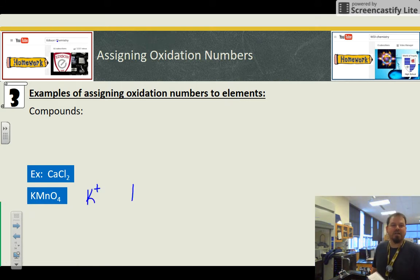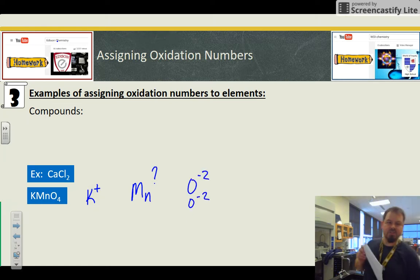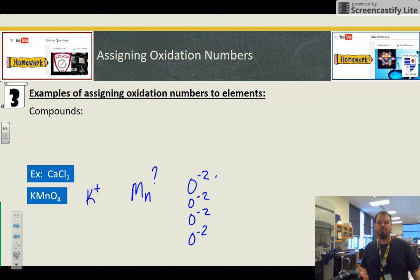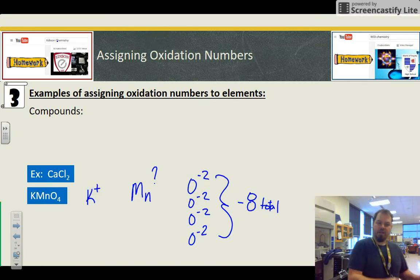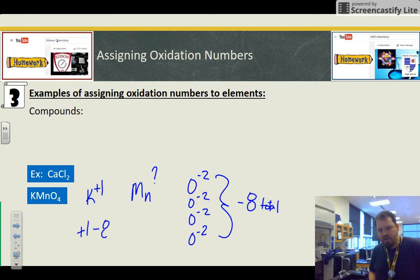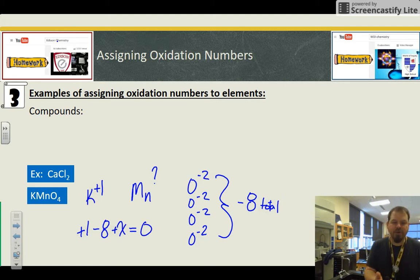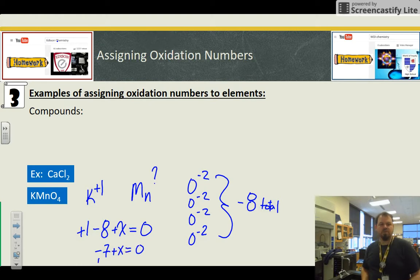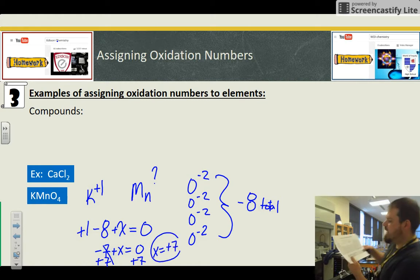K is a plus one, and then we don't really know because if we look, Mn's got a bunch of choices. I'm telling you, O is always negative two just about all the time, so I have a total negative eight charge. With the K, I only have a total plus one charge, so I need Mn to be a plus value that cancels out that negative eight. So add it all up, do your algebra, and I got negative seven plus X equals zero, so X equals seven. Now when I check, look, Mn, there it is. Can you see Mn? It has a choice of seven, pick it.